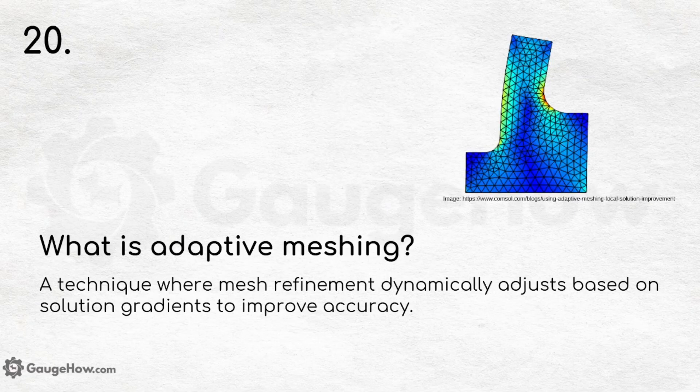What is adaptive meshing? Adaptive meshing is a technique where mesh refinement dynamically adjusts based on solution gradients to improve accuracy.